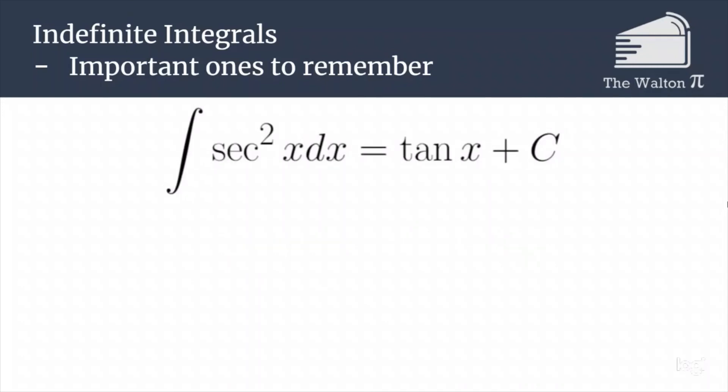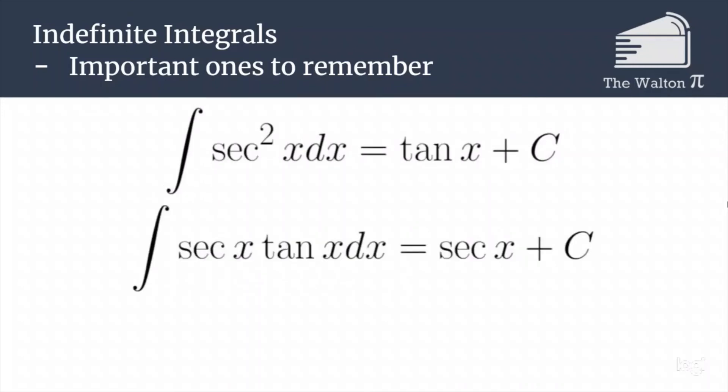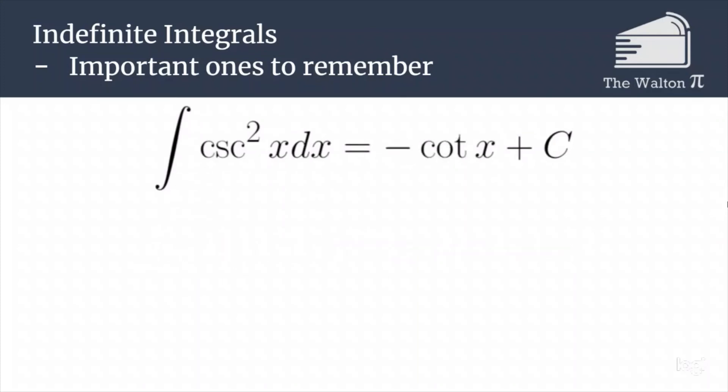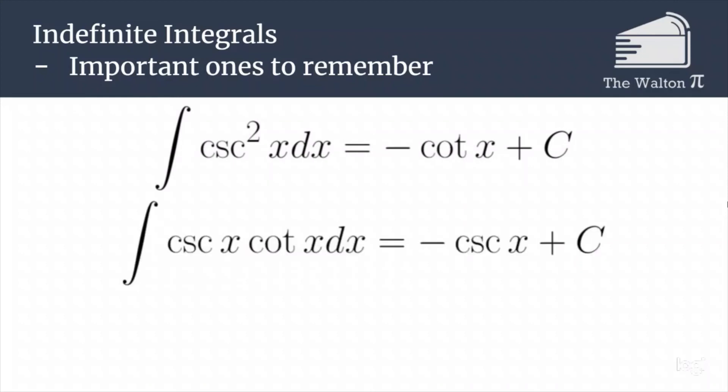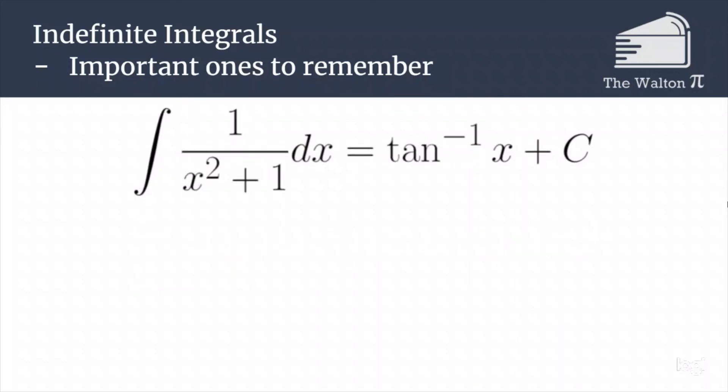The integral of secant squared is tangent, and the integral of secant x times tangent x is secant x plus C. The integral of cosecant squared x is negative cotangent x plus C, and the integral of cosecant x cotangent x is negative cosecant x plus C.